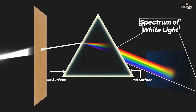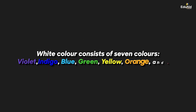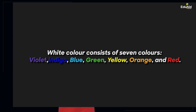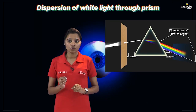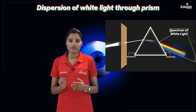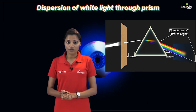We took white light and on the screen we are getting seven colours. That means the prism is helping us to know the nature of white light — what it is made up of. It is made up of seven colours: violet, indigo, blue, green, yellow, orange, red. This phenomenon where light splits into the components of which it is made up is known as dispersion. Since here we are learning about white light, it is called dispersion of white light.